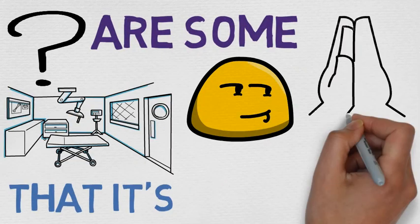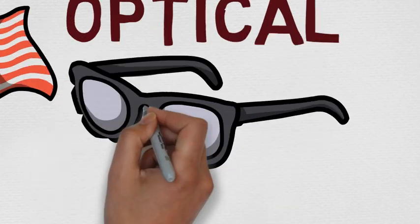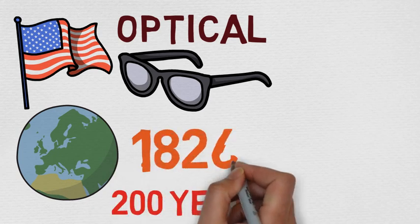What are some businesses that it's hard to believe have gone bankrupt? American Optical was the spectacle maker to the world for close to 200 years, starting in 1826.